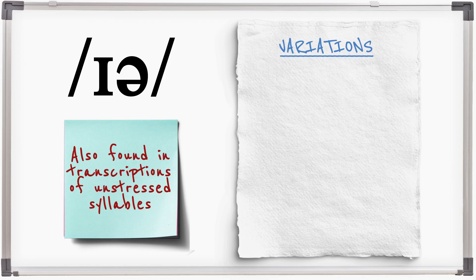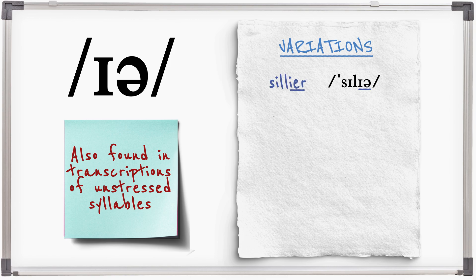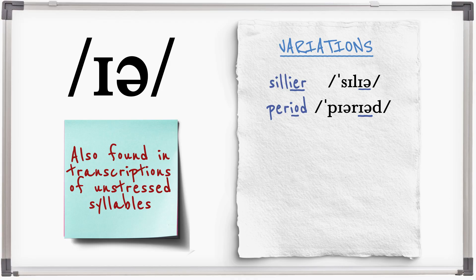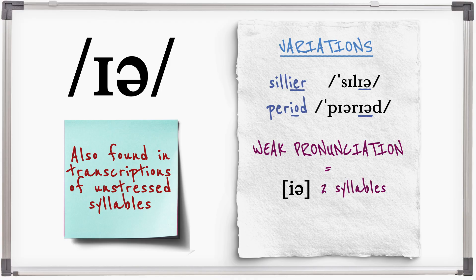The diphthong also appears in transcriptions of weak syllables such as cilia, period. However, these weak endings should not be treated as the same as the stressed phoneme. The endings would never be pronounced ear with a long monophthong. There are two ways to view these endings: ear with two weak syllables or yh with one syllable containing yh and a schwa.